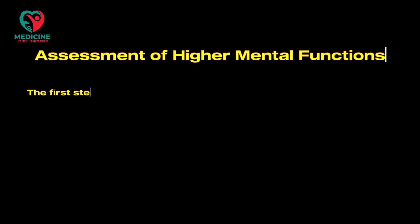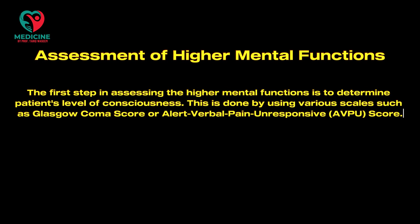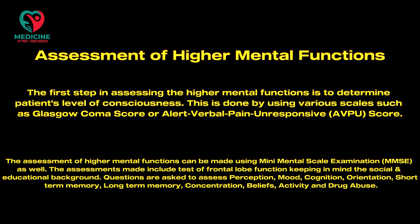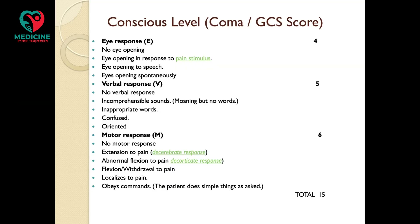Assessment of higher mental functions begins with determining the patient's level of consciousness using scales such as the Glasgow Coma Score or the Alert-Verbal-Pain-Unresponsive scale. The assessment can also be made using the Mini Mental State Examination (MMSE). Tests of frontal lobe function are included, keeping in mind the patient's social and educational background. Questions assess perception, mood, cognition, orientation, short-term and long-term memory, concentration, beliefs, activity, and drug abuse.